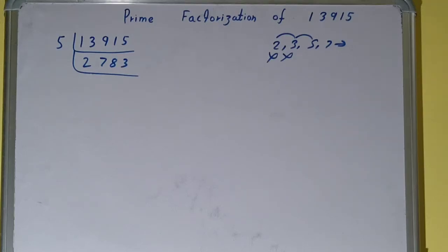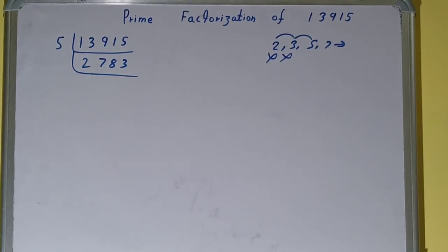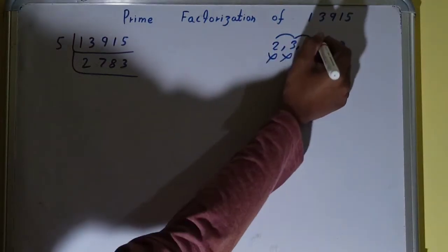Now is it divisible by 5? The answer is no, because the last digit is not 5. So what we'll do is we will go to the next lowest prime number, that is 7.